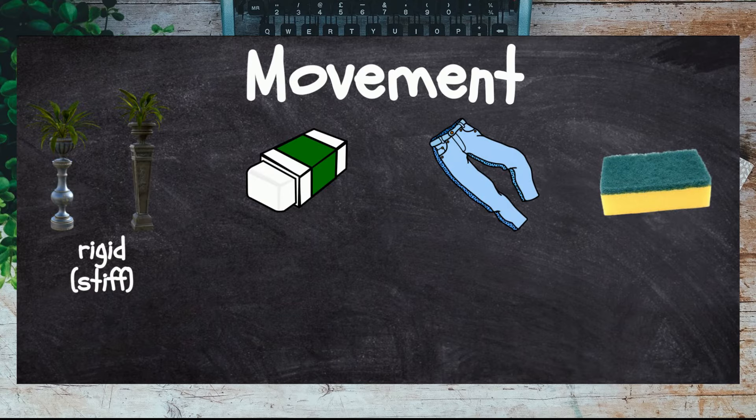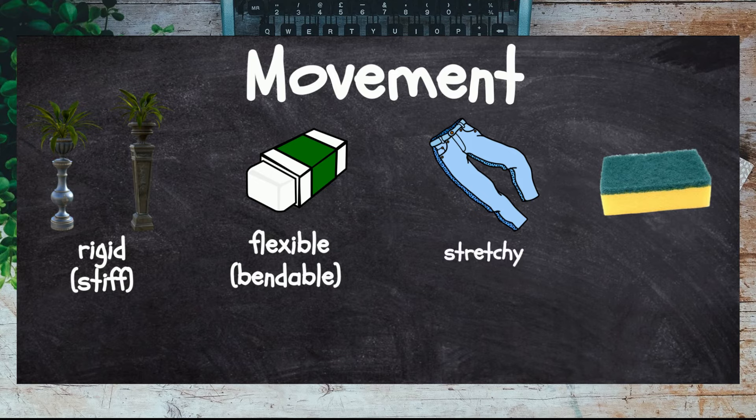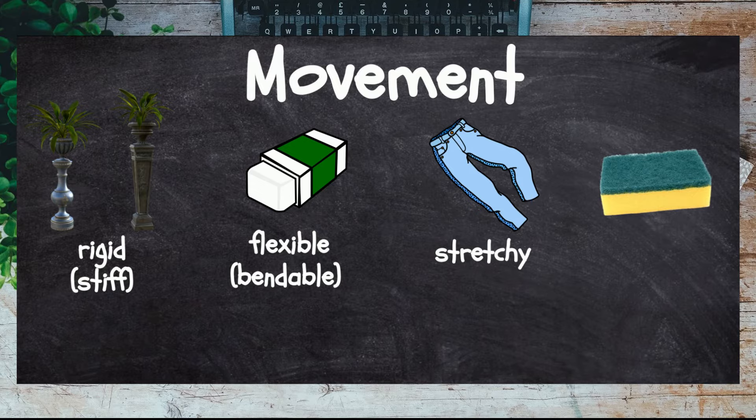If an object is rigid, it is stiff and holds its shape. Flexible means it can be bent and twisted. Stretchy indicates something can be stretched easily, like a pair of trousers or a shirt. Squashy can be easily crushed or squeezed into different shapes.